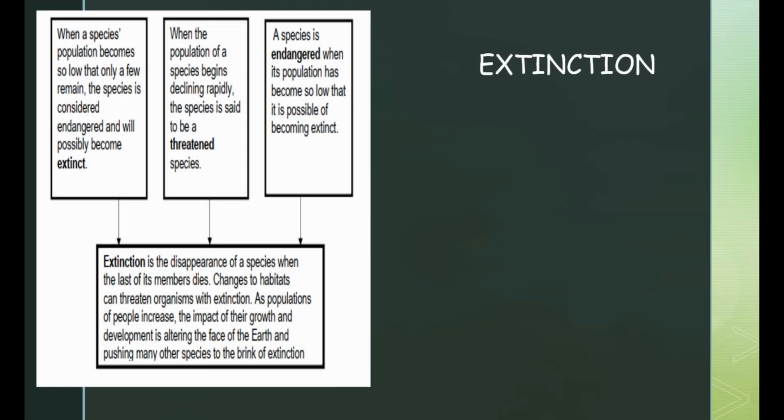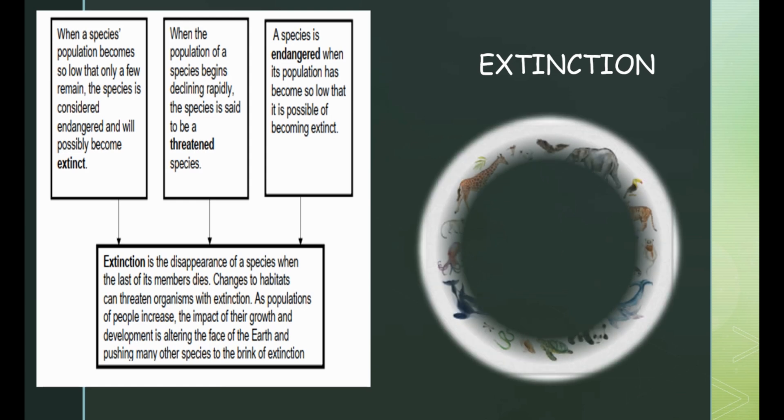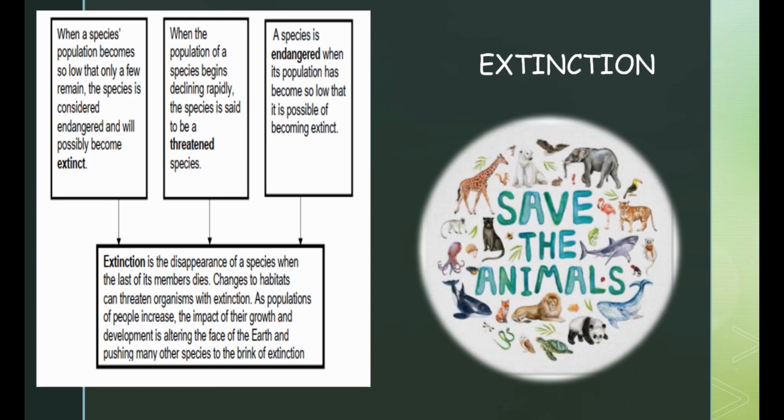Extinction is the disappearance of a species when the last of its members dies. Changes to habitats can threaten organisms with extinction. As populations of people increase, the impact of their growth and development is altering the face of the earth and pushing many species to the brink of extinction.